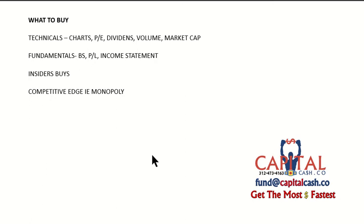Now to start this video — what to buy, how to buy, and what to look for. What's called technicals are all the numbers. It's what day traders look at: the charts, the price-to-earnings ratio, the dividends, the volume, and the market capitalization. Technicals are just how the stock trends, how it's gone up in the charts — the three-month, one-day, six-month, one-year, five-year, or ten-year.